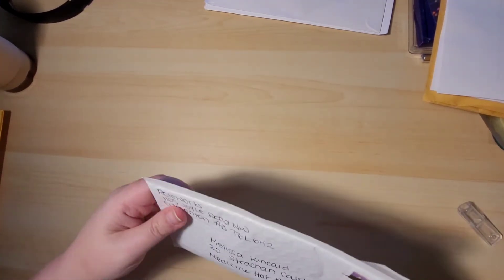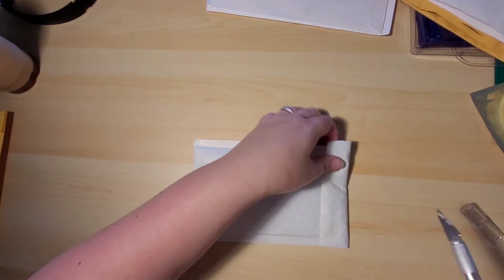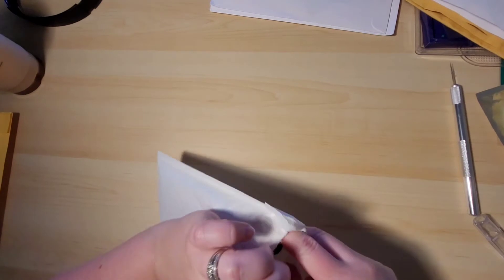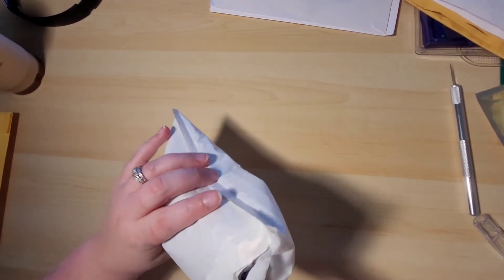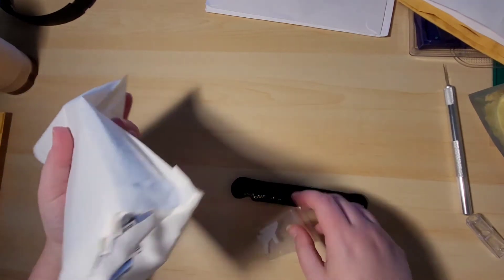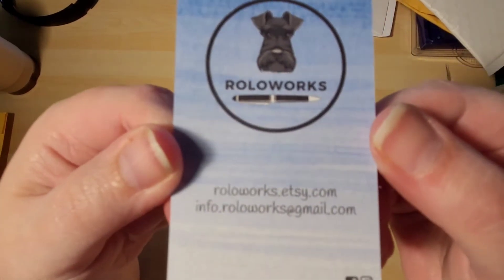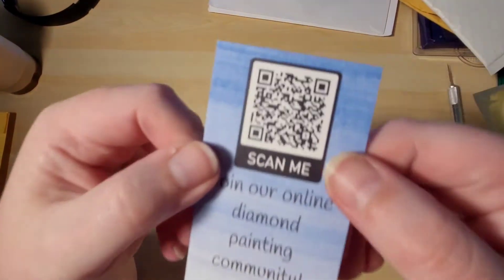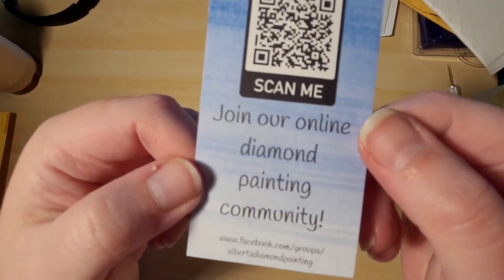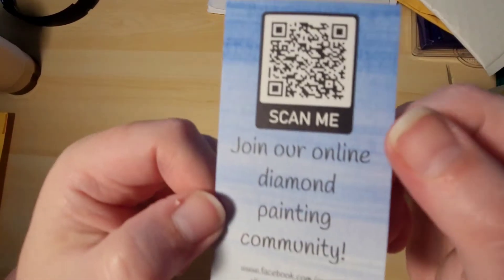This next one comes from Rolo Works over on Etsy. These guys are the ones that are based out of Edmonton, Alberta. So that's nice, not too far away from my home. Didn't take very long to get here at all, maybe a week. It comes in a nice little package. There's tips and a business card.